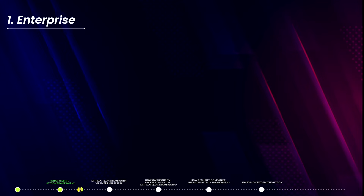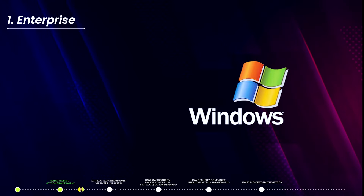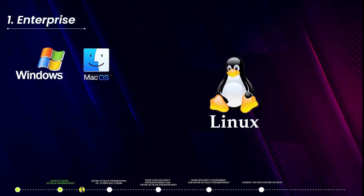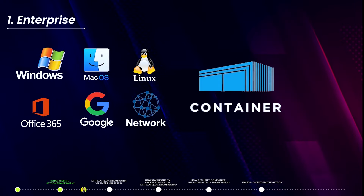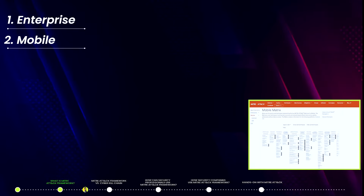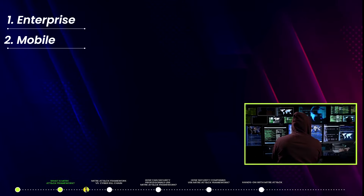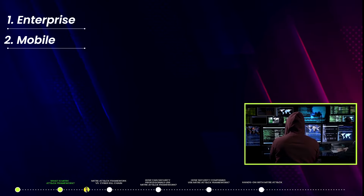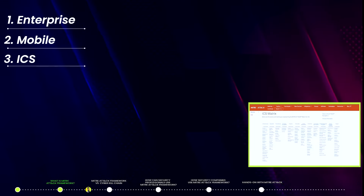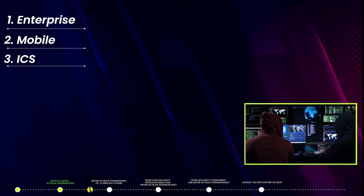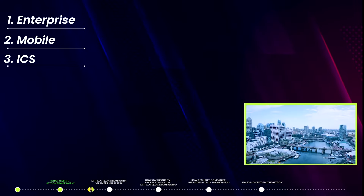The Enterprise matrix covers platforms such as Windows, macOS, Linux, Office 365, Google Workspace, network, containers, and many more. The second is the Mobile matrix, which talks about attackers' techniques to compromise Android and iOS devices. The third is the ICS matrix, which covers attackers' techniques used for compromising industrial infrastructure.